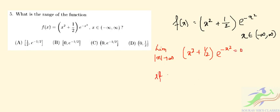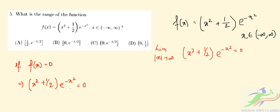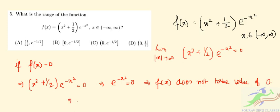If f(x) = 0, then (x² + 1/2)e^(−x²) = 0, which would require e^(−x²) = 0. Since that is impossible, f(x) does not take the value 0. Setting x² + 1/2 = 0 gives x = ±1/√2, which are the critical points.